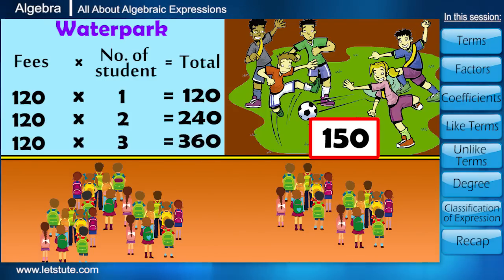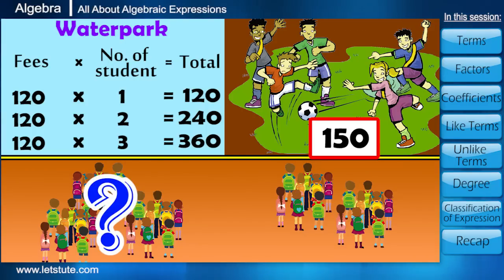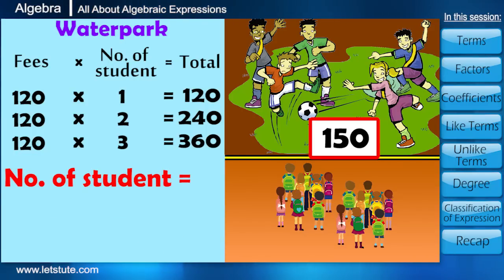But as of now, he doesn't know the number of students going for water park. Therefore, he took the number of students as X, which is any unknown number. So the amount will be 120 into X, right?